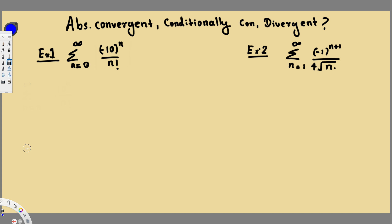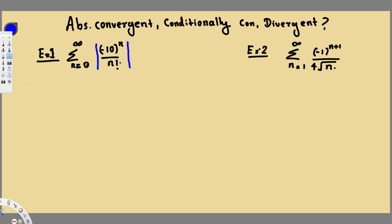Hey, what's going on guys? Let's do this problem right here. This question is asking whether these series are absolutely convergent, conditionally convergent, or divergent. First, we have to ask whether this series is absolutely convergent. To do that, we take the absolute value of this one and see whether it is converging.